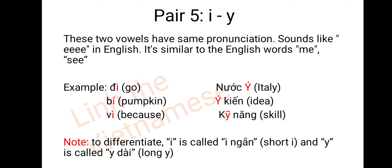Pair 5: I and Y. These two vowels have the same pronunciation — like 'E' in English, similar to the English words 'me' and 'see'. For example: di, bi, vì; nước ý, ý kiến, kỹ năng. Note: there are two different spellings — I is called 'y ngắn' or short y, and Y is called 'y dài' or long y.